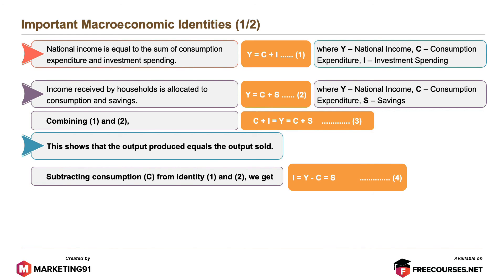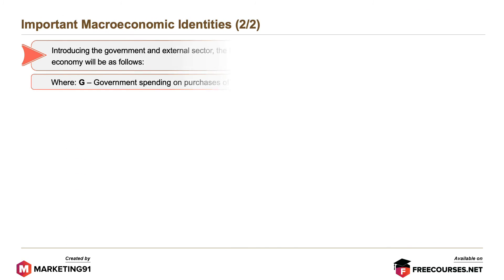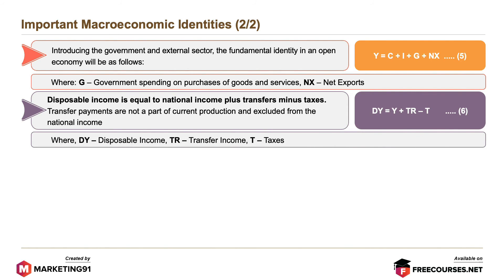Subtracting consumption C from the identities, we get I = Y − C = S. This equation shows that a simple economy is in equilibrium when investment equals saving. Introducing the government and external sector, the fundamental identity in an open economy is: Y = C + I + G + NX, where G denotes government spending on purchases of goods and services, and NX refers to net exports. Disposable income is equal to national income plus transfers minus taxes. Transfer payments are not a part of current production and are excluded from the national income.